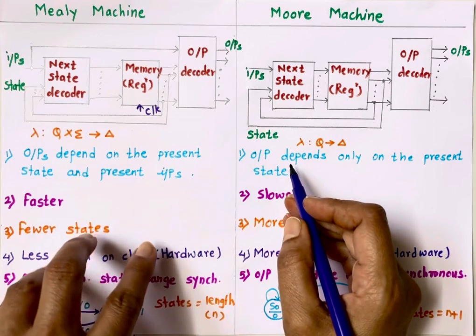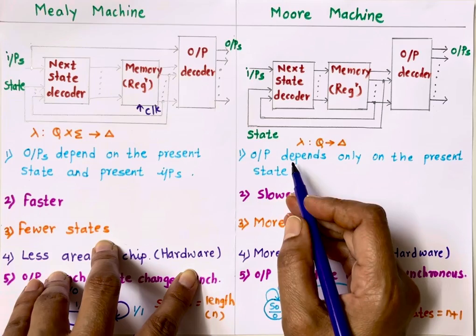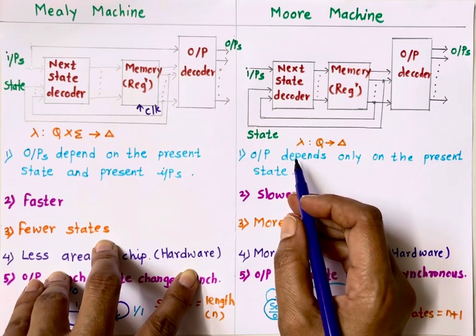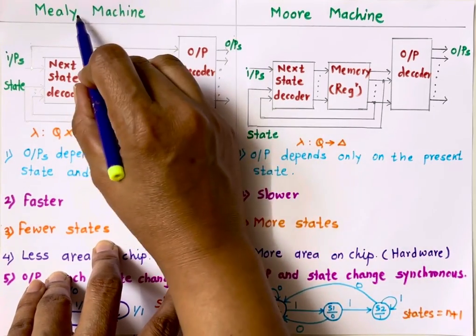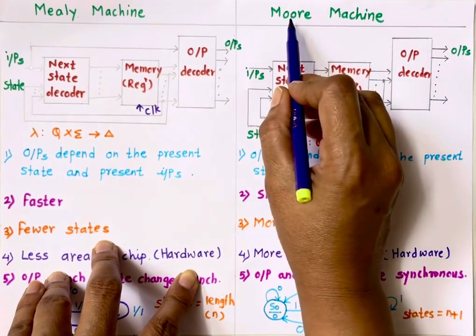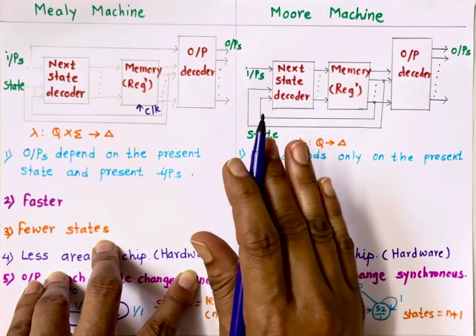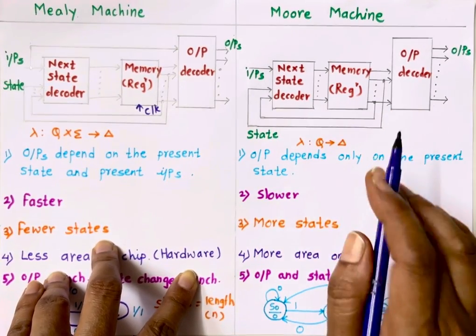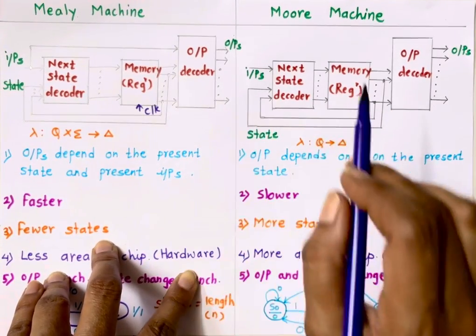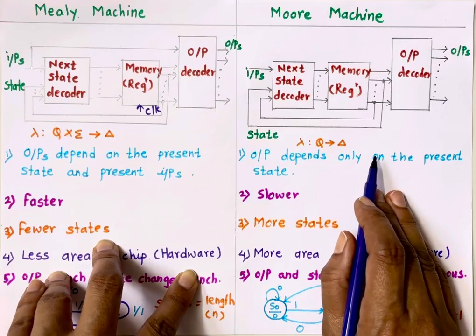Hello everyone, welcome back to Learn with Dr. Shobhanikam. In this video we will talk about the difference between Mealy machine and Moore machine. Both are finite state machines, which means they go through a finite number of states.